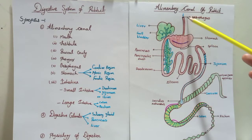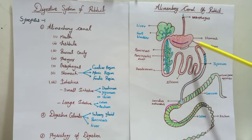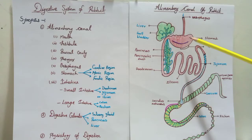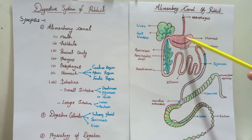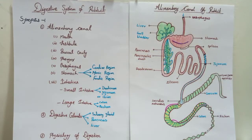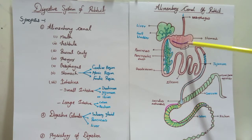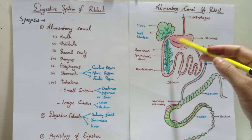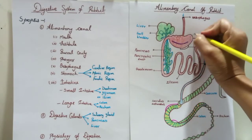The pharynx opens to the esophagus. The esophagus is a long tubular structure that transfers food from the mouth to the stomach, then opens to the stomach. The stomach is a large sac-like structure with three parts: cardiac region, pyloric region, and fundic region. Because the stomach is a horizontal structure, it has valves to prevent the backward flow of food.